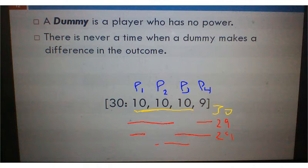Or player 2, player 3, and player 4. That also adds up to 29. So, not needed to win, and also doesn't make a difference in helping win. So, player 4 is never needed. We're going to call them a dummy.